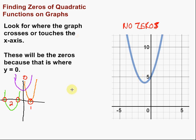So finding zeros of quadratic functions on graph, what we want to do is look for where the graph crosses or touches the x-axis, and that is going to be a zero. There's three different things that can happen. There can be two zeros, there can be one zero, there can be no zeros.